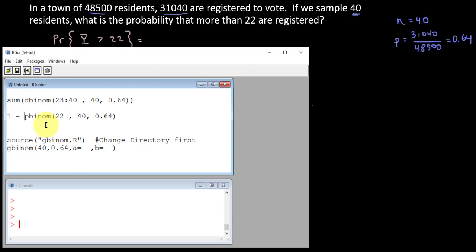Lastly, you could use the gbinom function. I've already changed my directory. I've got the file downloaded. But I do need to source that file. And that went off without a hitch. And gbinom, I need to do n, p, and then the values a equals b equals that we need to input would be 23 through the end of 40.